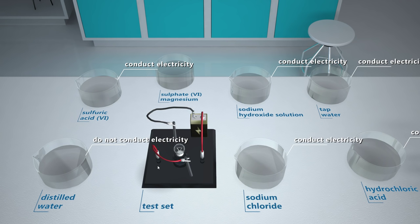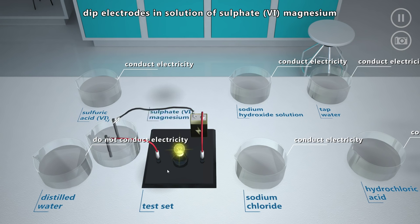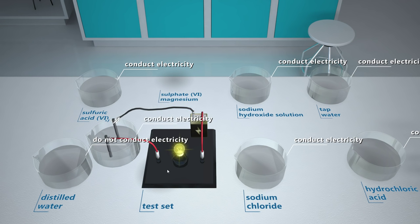Let's see if the same will happen with the solution of sulfate magnesium. Hydrated magnesium sulfate is commonly known as bitter salt or English salt. It was in fact mined in the United Kingdom, Epsom, and sold as a medicine with laxative properties. You might have noticed that after the graphite electrodes are immersed in salt solutions, we observe the illumination of the light bulbs in our test kit. Salts which dissolve in water conduct electricity as a result of the electrolytic dissociation they undergo.